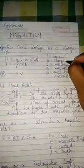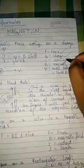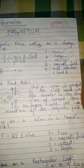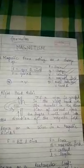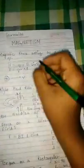F equals QVB sine theta, and in that F is force, Q is charge, V is velocity, B is magnetic field, and theta—not Q, it's theta, sorry—theta is the angle between V and B. Okay, next.